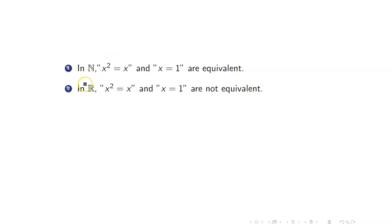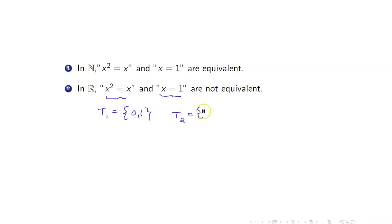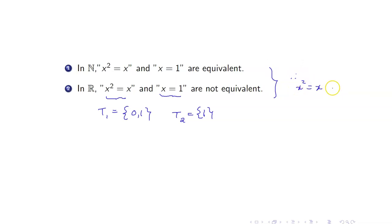However, if we change our domain to the set of real numbers, the truth set of x² = x is {0, 1}, whereas the truth set of x = 1 is {1}. So they are not equivalent in ℝ. Since they are not equivalent in all possible domains, x² = x and x = 1 are not equivalent.